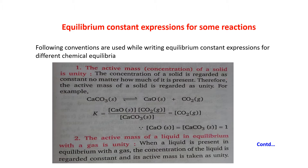Following conventions are used while writing equilibrium constant expressions for different chemical equilibria. The first rule is: the active mass or concentration of a solid is unity. Any solid taking part in a reaction, its concentration will be taken as unity. The concentration of a solid is regarded as constant no matter how much of it is present, so the active mass of the solid is regarded as unity.